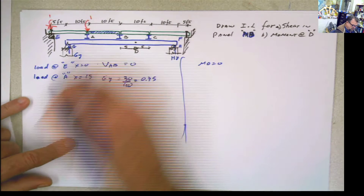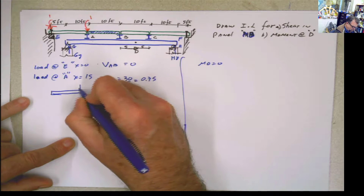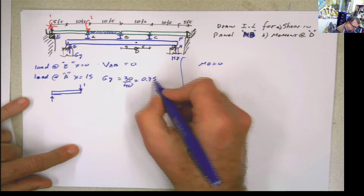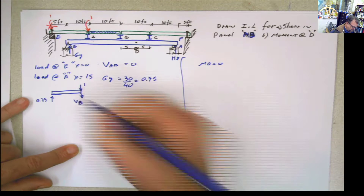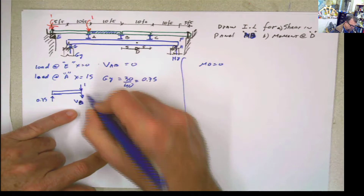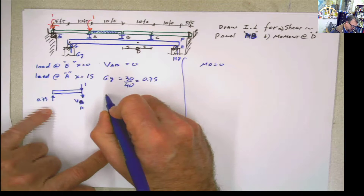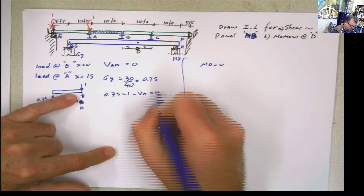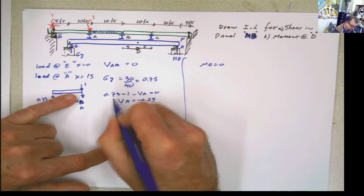Once you have the reaction, put your girder, put the load of 1 on top, put your reaction of 0.75, and call the unknowns V sub B and V sub A. If you do summation of forces in Y: 0.75 minus 1 minus VA equals 0, so VA equals negative 0.25.